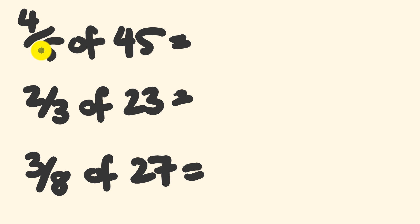The first question, 4 fifths of 45. Now, if this number on the bottom goes into the number we have here easily, I tend to divide first. So 45 divided by 5, nice and easy. 45 divided by 5 is equal to 9. The top number here is a multiplication number. 9 times 4, we have our answer, which is 36.